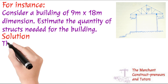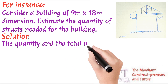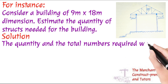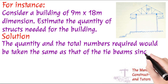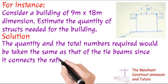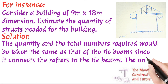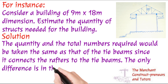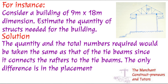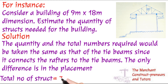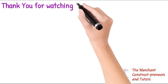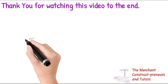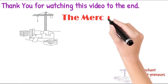For the example, we are considering a building of 9 meters by 18 meters in dimension, estimating the quantity of struts needed. The quantity and total numbers required will be the same as that of the tie beams, because the strut connects the tie beams to the rafters and cannot work in isolation. So what we calculated for the tie beams is the same figure we use for the struts. Looking at the image, you can see anywhere you have a tie beam, a strut is there to support it — so we apply the same calculation.